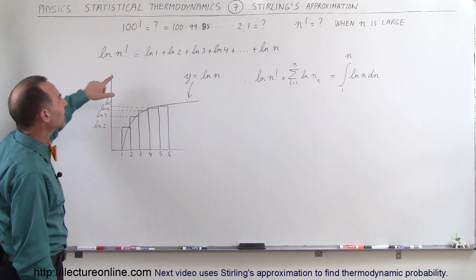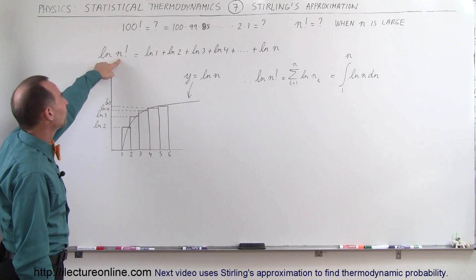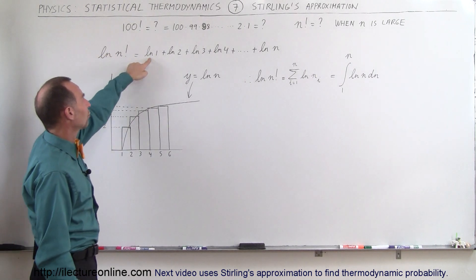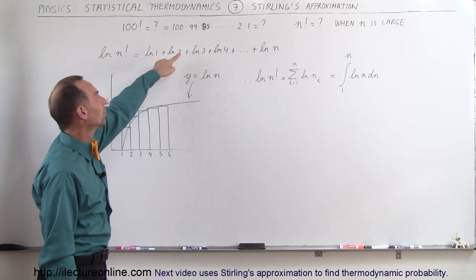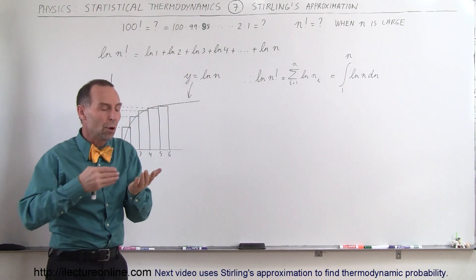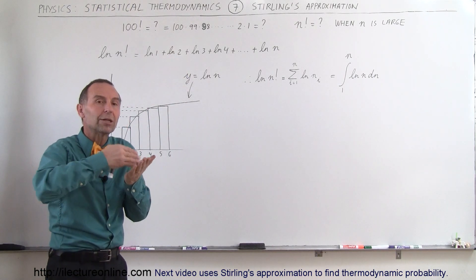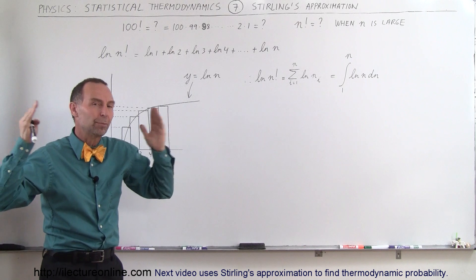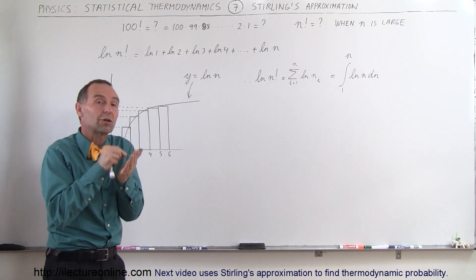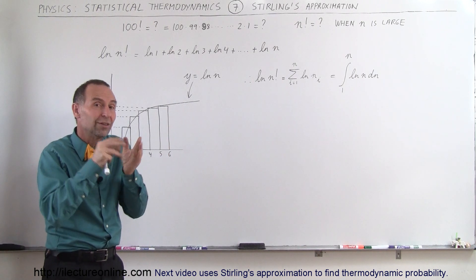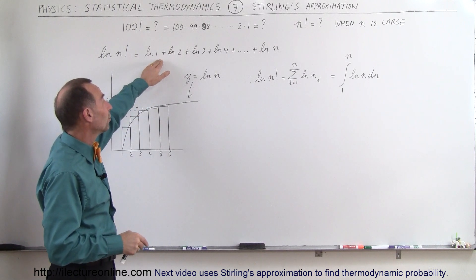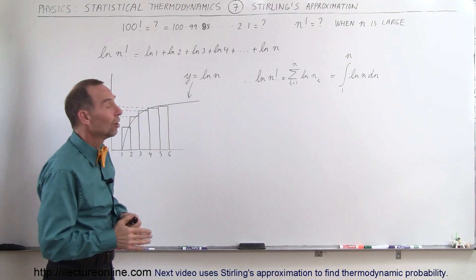We can take the natural log of n factorial, which means it's the natural log of 1 plus the natural log of 2 plus the natural log of 3. Because when you multiply numbers together and take the natural log of a product, that is equal to the natural log of each individual term separated with a plus sign. We can simply add them together like that.